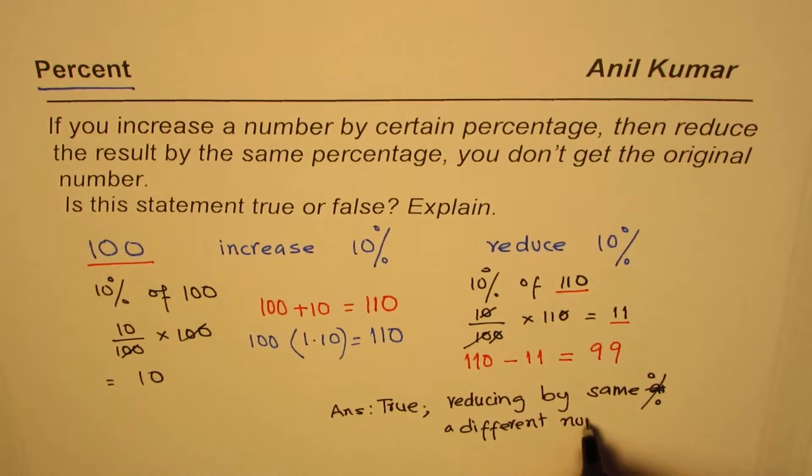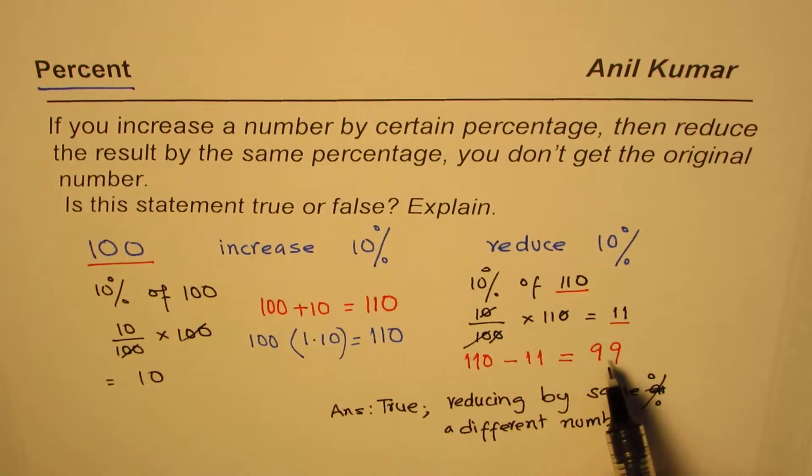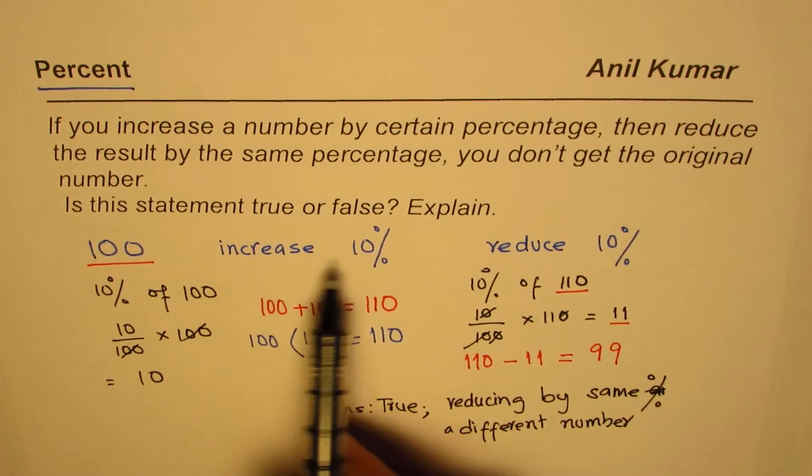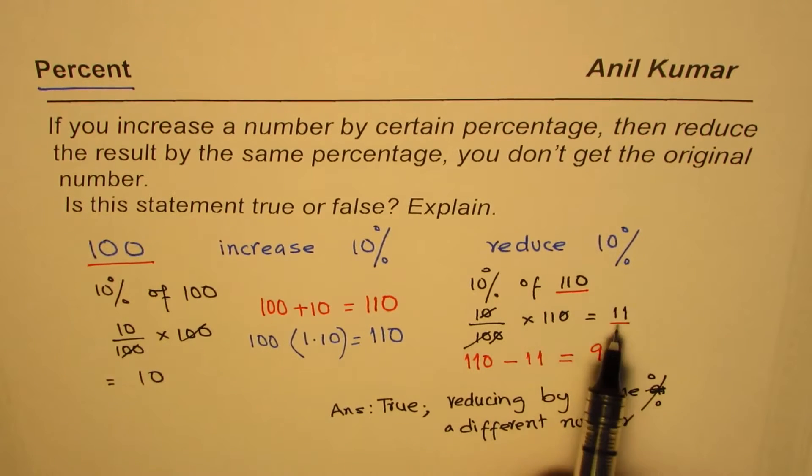Since in this case the number was higher by 10 percent, we got a result which was lower than the number we started with. When we increased by 10 percent we added 10, but when we reduced by 10 percent we took away 11, not 10, since we reduced on the higher number.